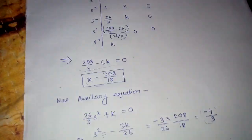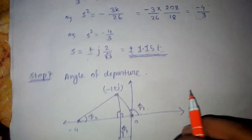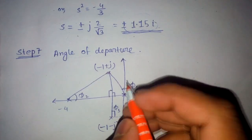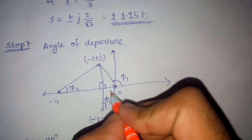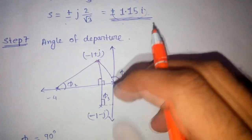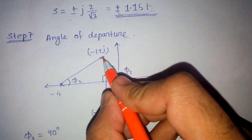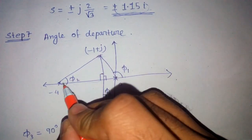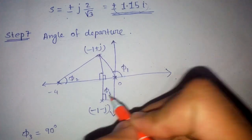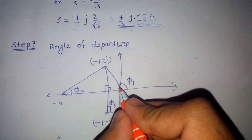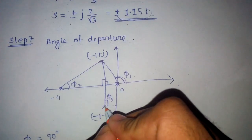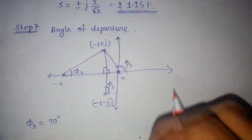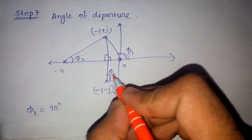Step 7 is only required when we have complex (imaginary) poles. If poles are only on the real axis, there is no need to find the angle of departure. Since we have complex poles at minus 1 plus j and minus 1 minus j, we must find the angle of departure. We join the poles, measure the angles φ1, φ2, and φ3 that the lines from other poles to the complex pole make.